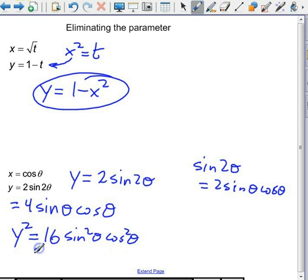Why do I want to do that? Because that lets me rewrite sine squared as 1 minus cosine squared. So 16 sine squared becomes 1 minus cosine squared. And then I have a cosine squared out here.